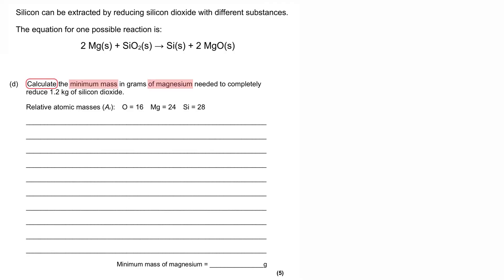Calculate the minimum mass in grams of magnesium needed to completely reduce 1.2 kg of silicon dioxide. And we're presented with some relative atomic mass values as well, which we don't need to look for in the periodic table.